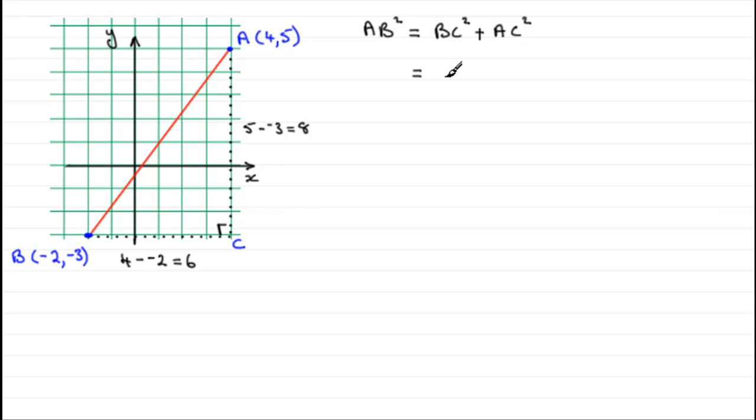So when it comes to working this out, the length BC is going to be then 4 minus minus 2. That's the difference in the x-coordinates. By Pythagoras' theorem, we have to square it though. And for AC, we do the difference between the y-coordinates, 5 minus minus 3. And we square that.